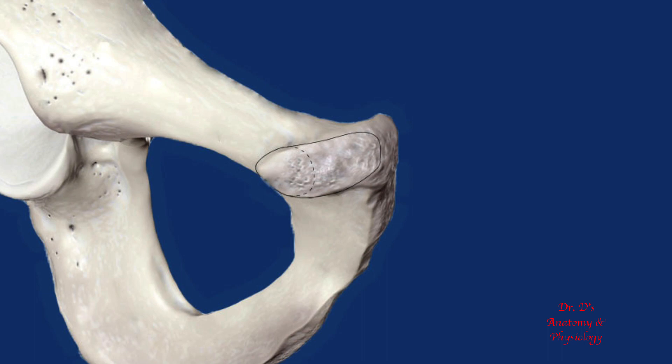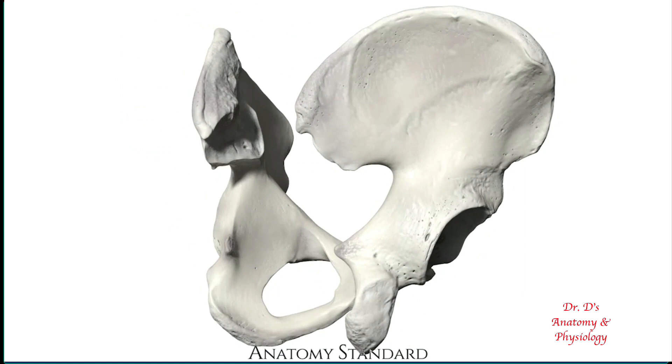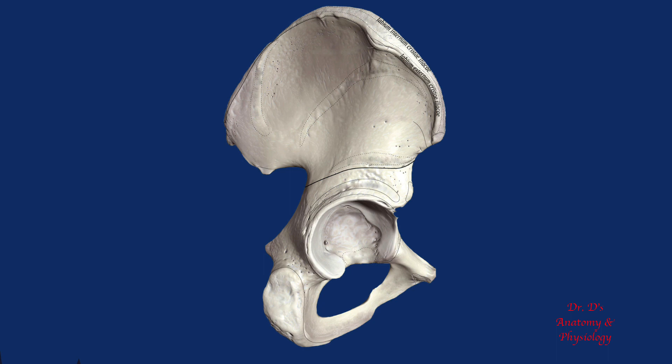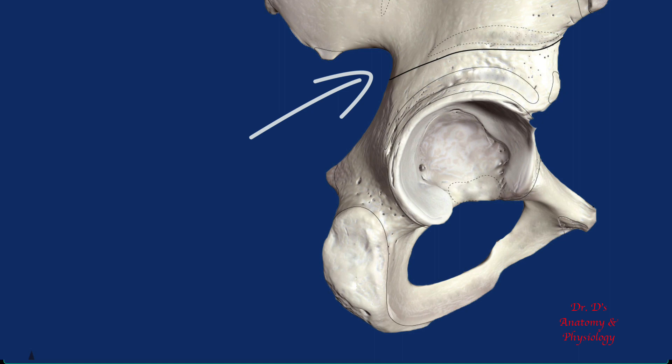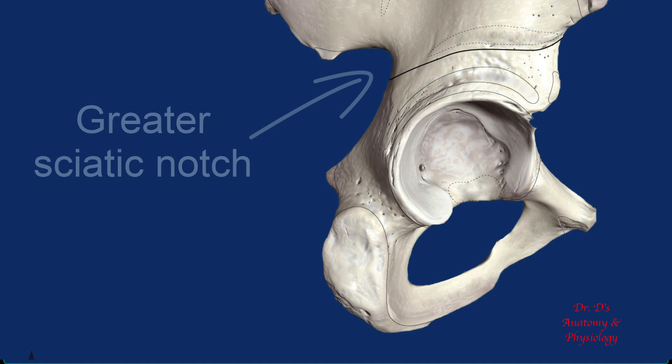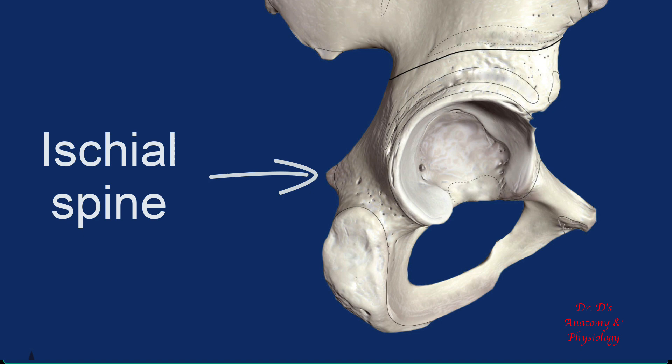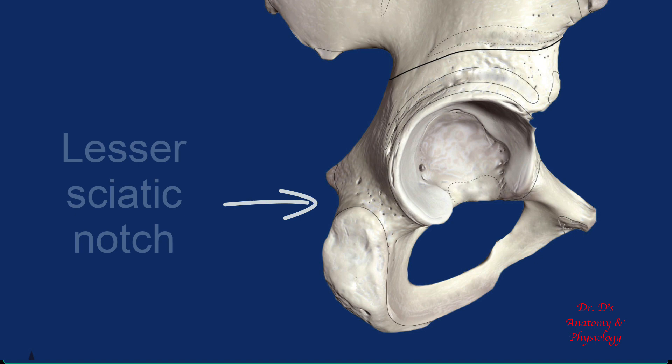Turning to the lateral side of the hip bone, we get a better view of features of the ischium. On the ilium there is a distinctive notch along the posterior border called the greater sciatic notch. This notch ends inferiorly with a spine called the ischial spine. Below the spine there is a smaller notch called the lesser sciatic notch.